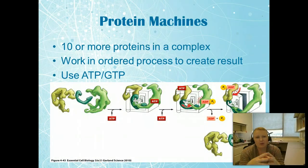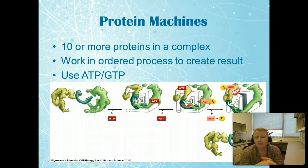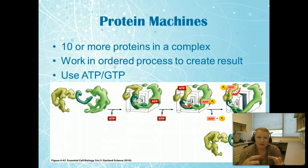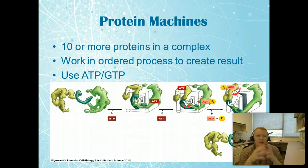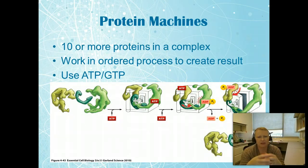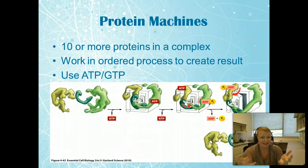Protein machines are amazing — we've already talked about ATP synthase as a classic example. It has ten or more proteins in the complex and works in a very ordered process to create a result, always requiring energy. With something so complex, there's no way this happens in an energetically favorable environment on its own. These machines are more common than we usually discuss and are what help drive a lot of the cell's functions that get us out of bed every morning.